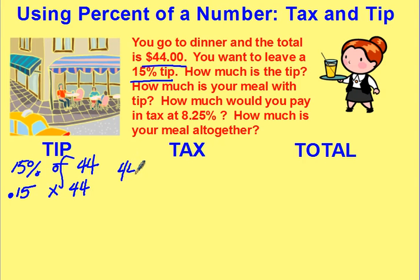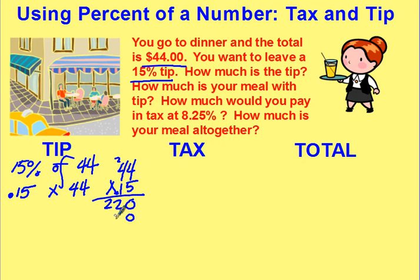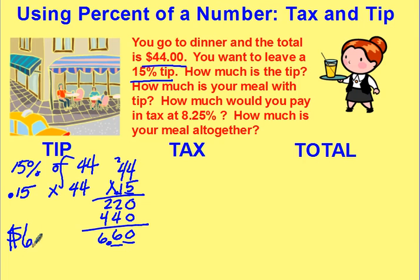Go out to the side and work it out: 44 times 0.15. It won't matter which one you put on the top or the bottom. 5 times 4 is 20, carry your 2. 5 times 4 is 20, plus 2 is 22. Drop a 0. 1 times 4 is 4, 1 times 4 is 4. Adding down: 660. You have two decimal places in your question, so you need two in your answer. So you should leave a tip of $6.60.